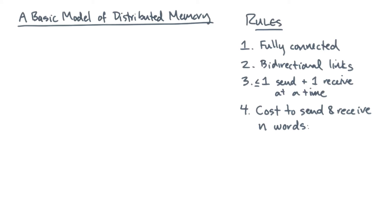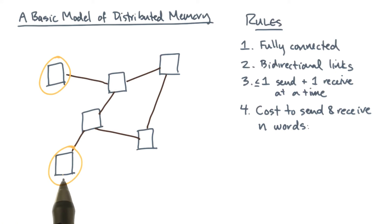The fourth rule is about the cost of a simultaneous send and receive of n words. So suppose this is our computer, and let's further suppose that this node wants to send a message to this node. There are several different paths. Here's one path, and here's another. Regardless of which path the message takes, rule number four says the following: The time to send this message, if it contains n words, is a constant alpha plus another constant beta times the size of the message.